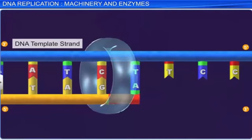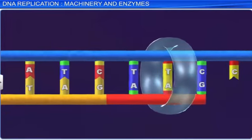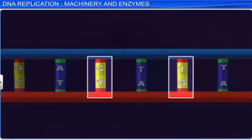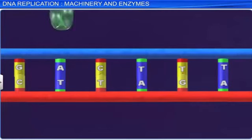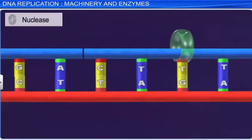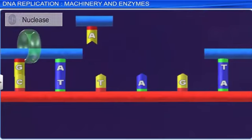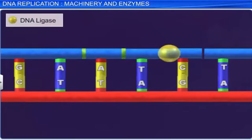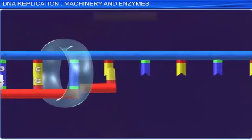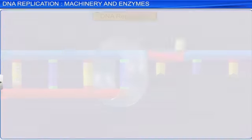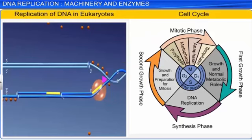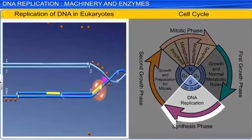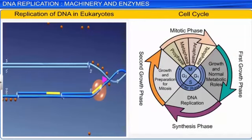Further, cellular proofreading mechanisms ensure the fidelity of DNA replication. In case wrong bases are entered into the helix of DNA by mutation, the enzyme nuclease can identify and correct them. They cut off the defective segment of DNA and introduce the correct segment, which is then joined by the enzyme DNA ligase. However, scientists are still to understand all the aspects of DNA replication. Although it is a known fact that replication of DNA in eukaryotes takes place in the synthesis phase of the cell cycle.